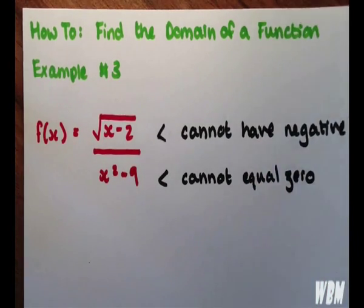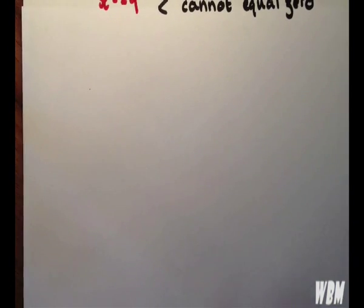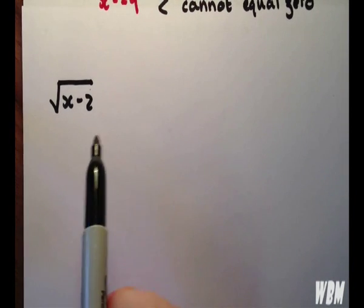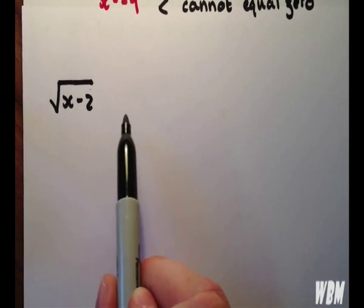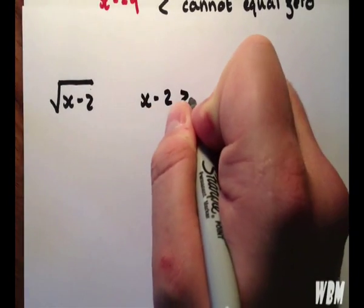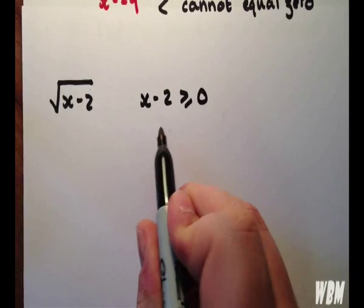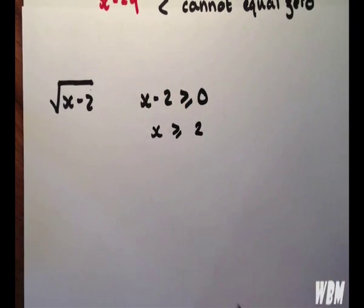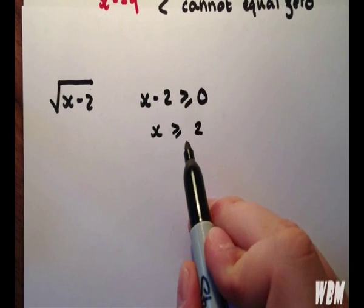So let's first consider the root of x minus 2. We want x minus 2 greater than or equal to 0. Adding 2 to each side gives the answer of x is greater than or equal to 2.